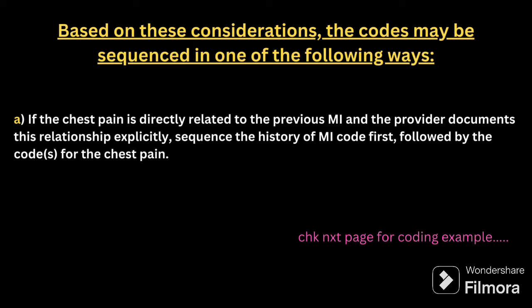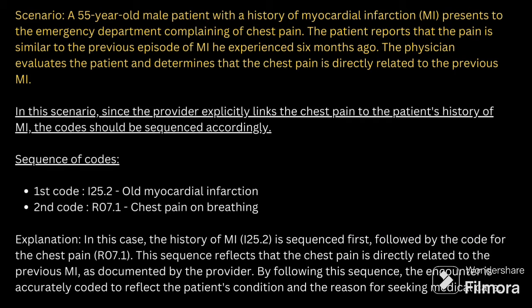In the next slide I have added an example, so please make a note of it and study it. A 55-year-old patient is coming to the hospital with history of MI and he is also having chest pain. It is documented that the chest pain is related to the MI. So here I have added the old myocardial infarction history code as the first code and chest pain as the second code, since they are related.